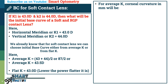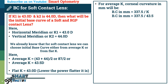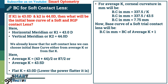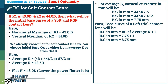For average K, corneal curvature in mm will be: base curve in mm equals 337.5 divided by K, or 337.5 divided by 43.5, or base curve in mm equals 7.75 mm. This 7.75 mm is the actual corneal curvature based on average K. So the initial base curve of a soft trial contact lens will be: base curve in mm equals base curve of average K plus 1, or 7.75 plus 1, equals 8.75 mm.